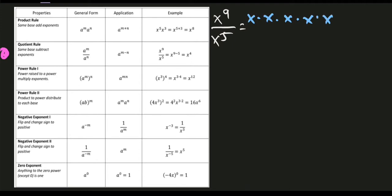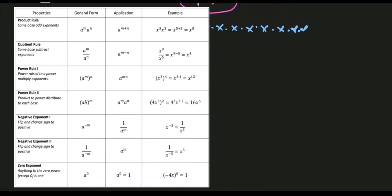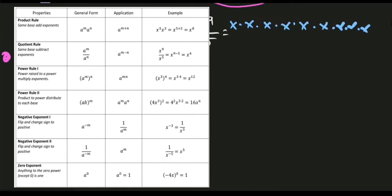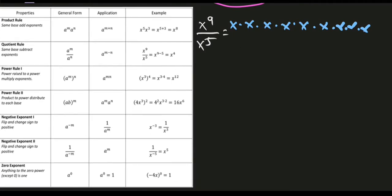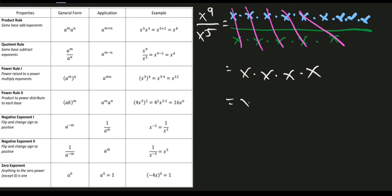x raised to 9 equals x multiplied by itself 9 times, and x raised to 5 equals x multiplied by itself 5 times. Since we are dividing, we cancel out like terms — the 5 x's in the denominator cancel 5 from the numerator — leaving x times x times x times x, which equals x raised to 4.